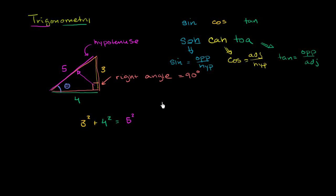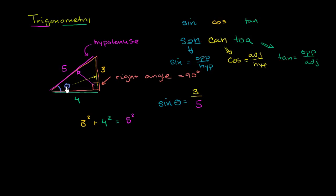To find sine of theta, we remember SOHCAHTOA — sine is opposite over hypotenuse. The opposite side to theta is 3, since it opens onto the 3. The hypotenuse is 5. So sine of theta equals 3 over 5, or 3 fifths. And this ratio will always be 3 fifths for this angle, even if the actual triangle were larger or smaller.